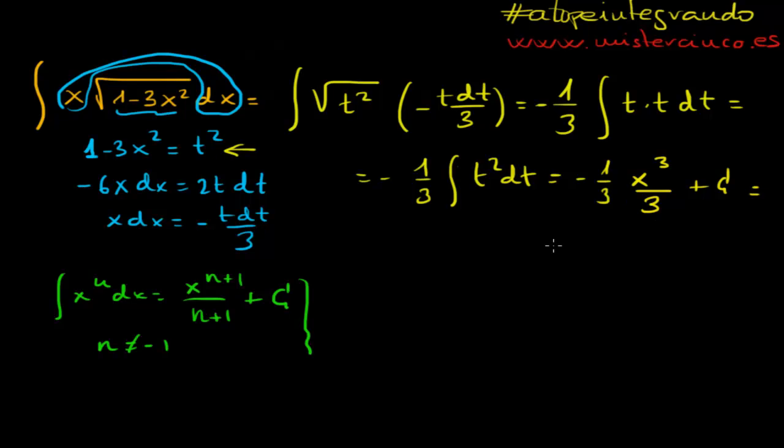So if we do this, right, sorry, there was a big mistake here. You had also seen it. This is not x, but t. Right, so it's t to the power 3, over 3, plus the constant.